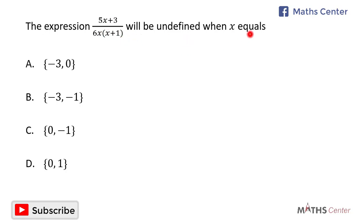If you have an expression of the form a divided by b, the expression will be undefined when the denominator, which is b, is equal to zero. So here, the expression 5x plus 3 divided by 6x times x plus 1 will be undefined when the denominator, which is 6x times x plus 1, is equal to zero.